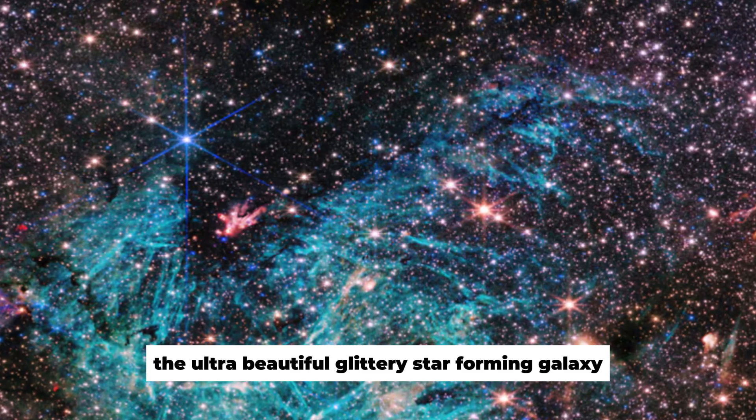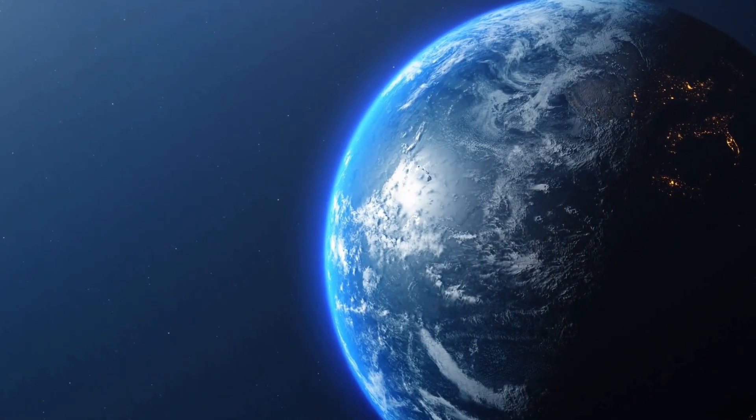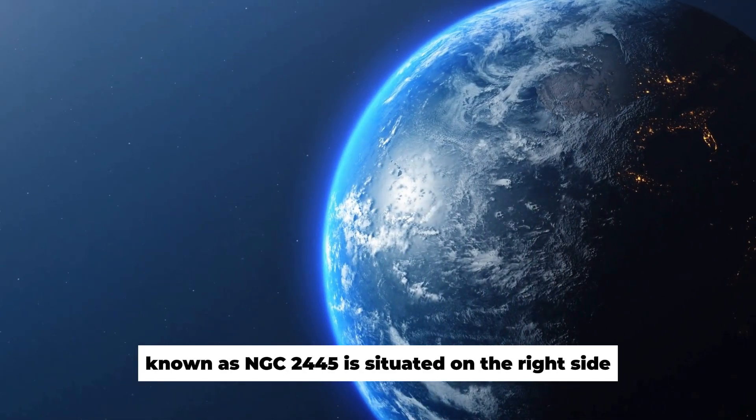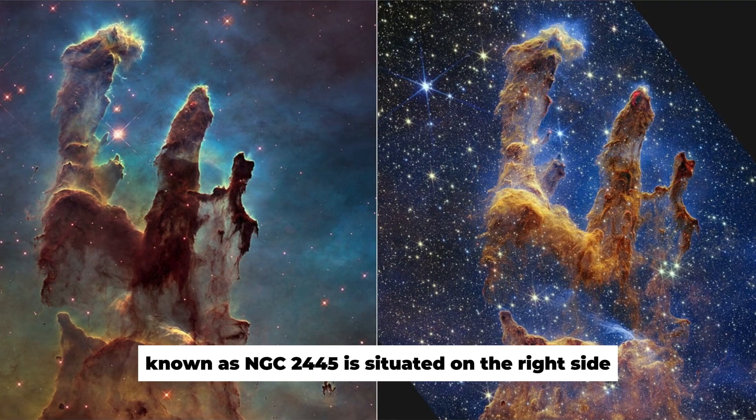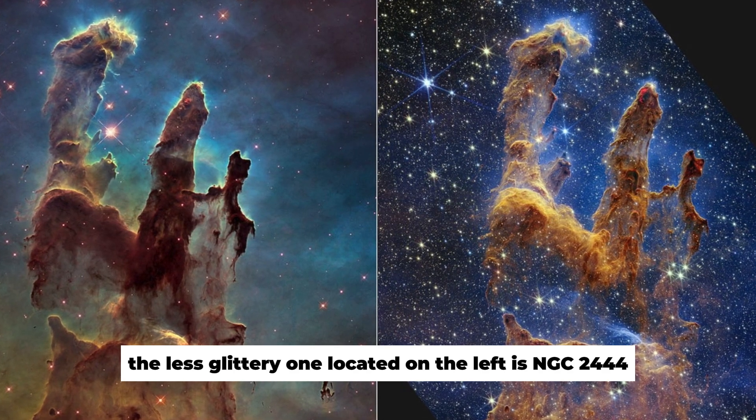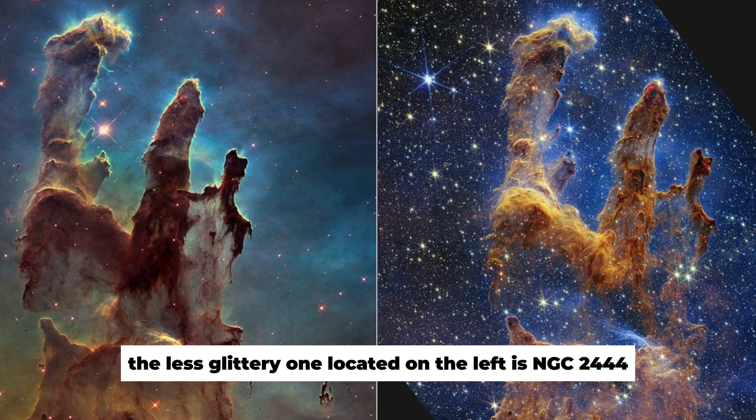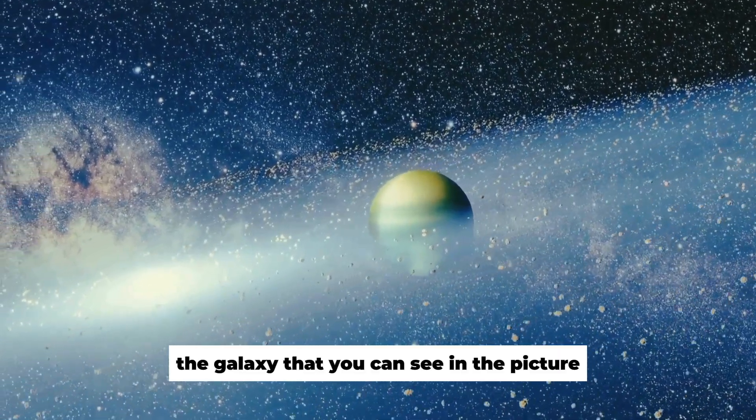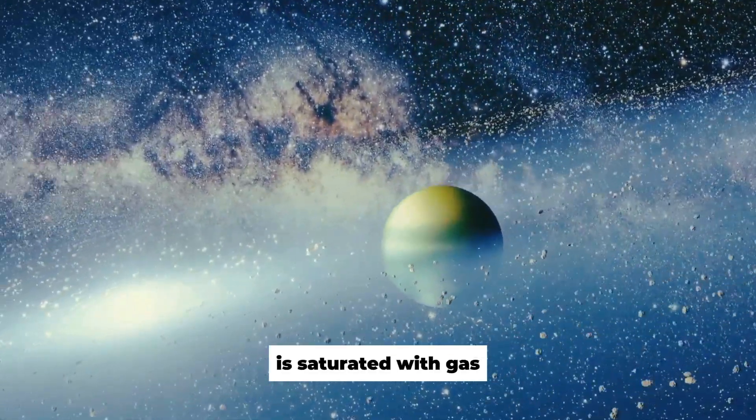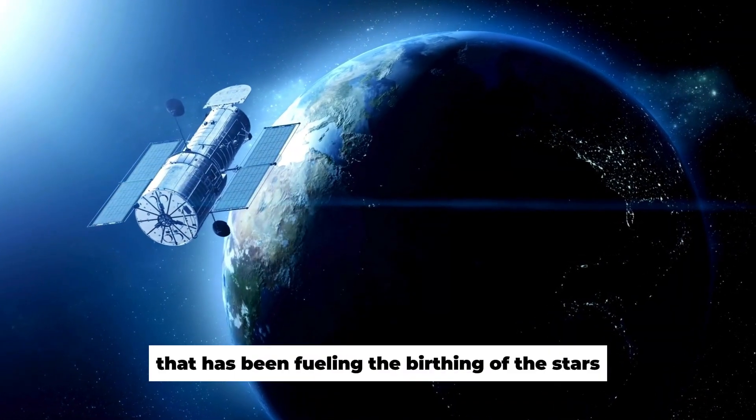The ultra-beautiful, glittery, star-forming galaxy known as NGC 2445 is situated on the right side. The less glittery one, located on the left, is NGC 2444. The galaxy that you can see in the picture is saturated with gas that has been fueling the birthing of the stars.